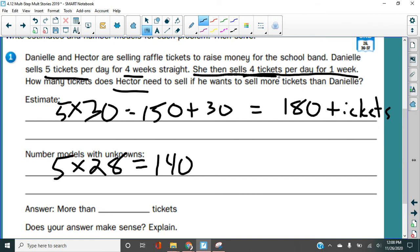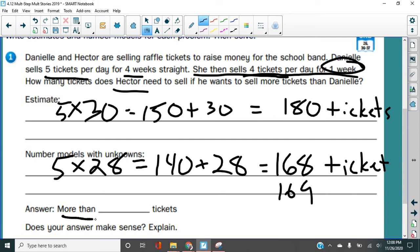Then she sold four tickets per day for one week. How many more tickets is that? Yeah, it's 28 more, right? If you said 168, you were right too, right? Because we need to add 28 more because that's what she sold in this week. And that gives us 168 tickets. And so really, our guy here, Hector needs to sell another one. He needs to sell 169. But this answer says more than 168.